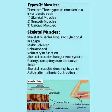Types of muscles: There are three types of muscles in a vertebrate body. Number one: skeletal muscles. Number two: smooth muscles. Number three: cardiac muscles. Now we will discuss the first type — skeletal muscles.